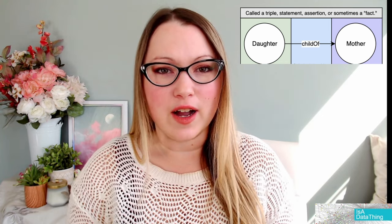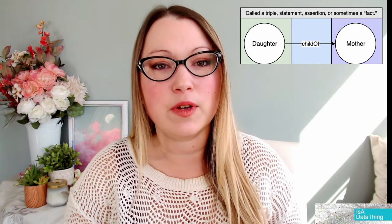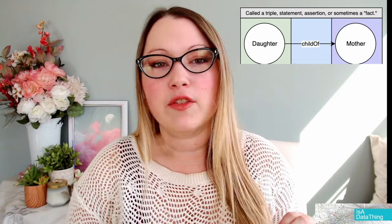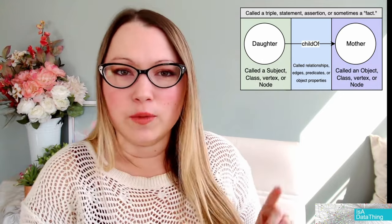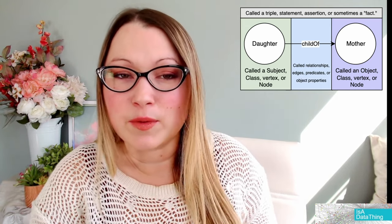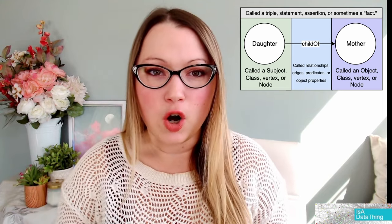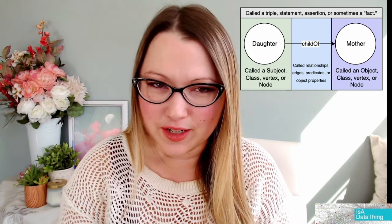Today we're going to be talking about that thing that connects two nodes or two classes — the circles you see in a knowledge graph. For simplicity, I'm going to call them relationships in this video. The full list of names they go by includes relationships, edges, predicates, and object properties. The simplistic way of thinking about it: it is the way that two things are joined — what is the relationship between these two things?